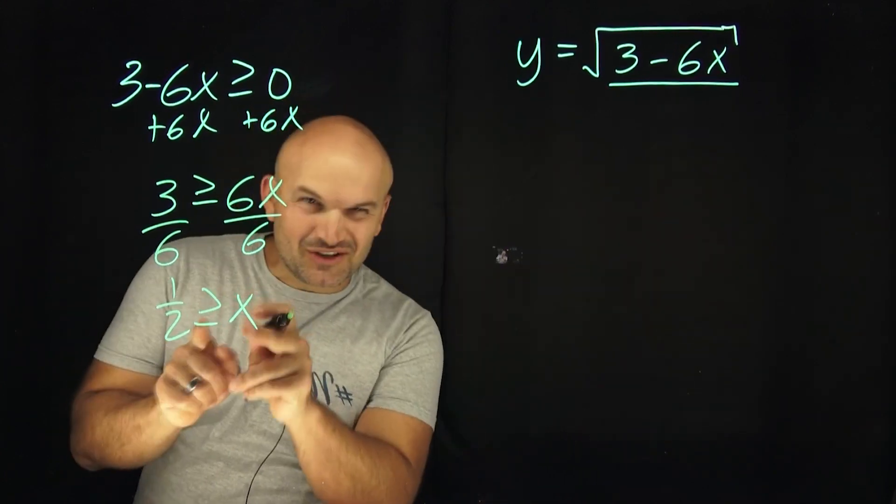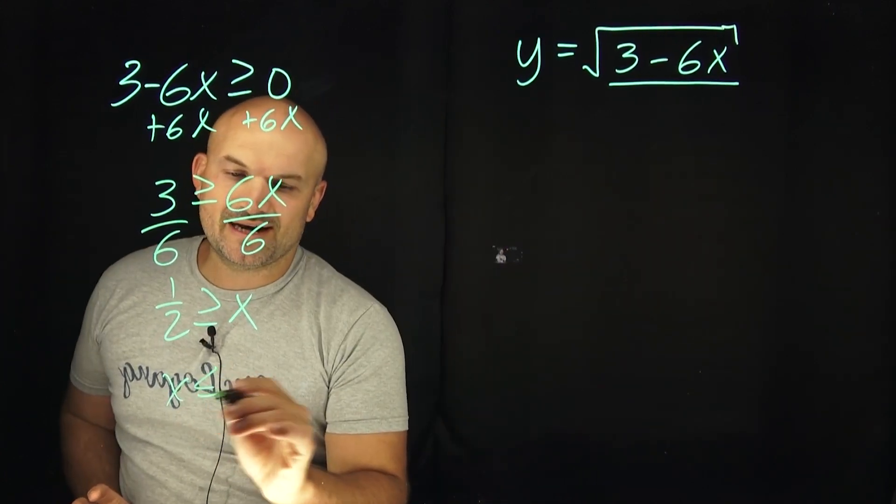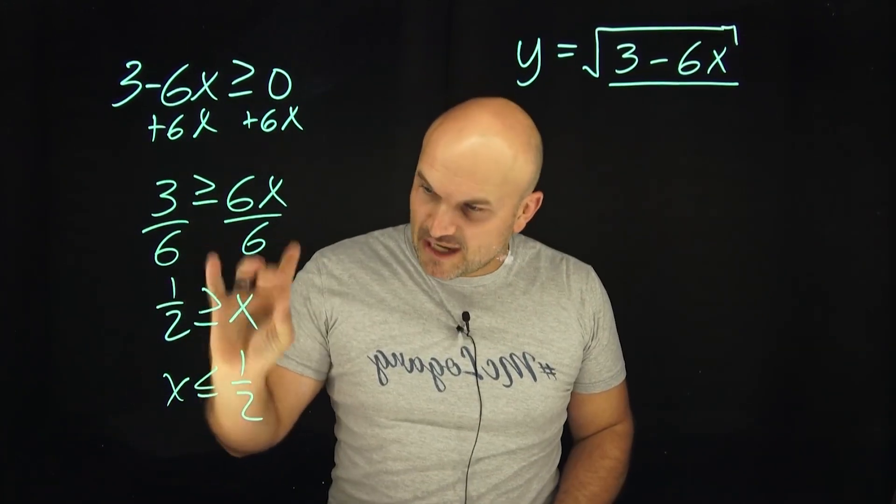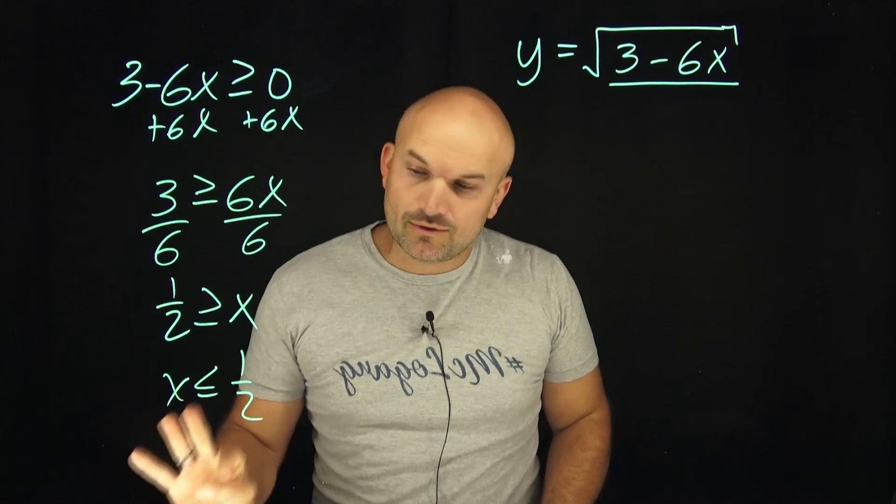Now sometimes students still get confused here. So therefore, you can just rewrite everything around and you say, okay, the domain of this function is going to be all values that are less than or equal to one half.